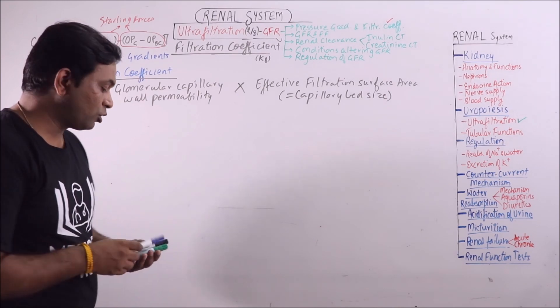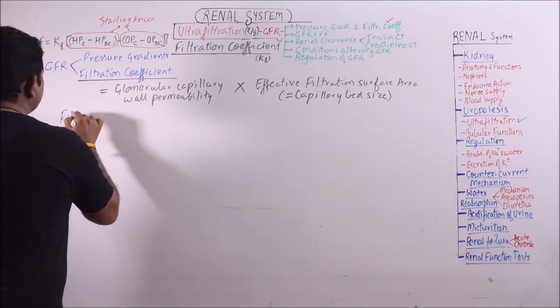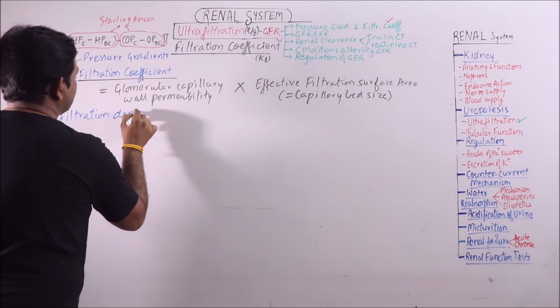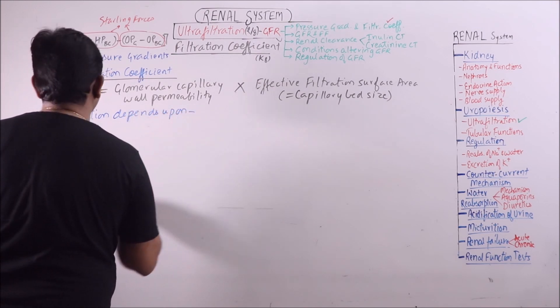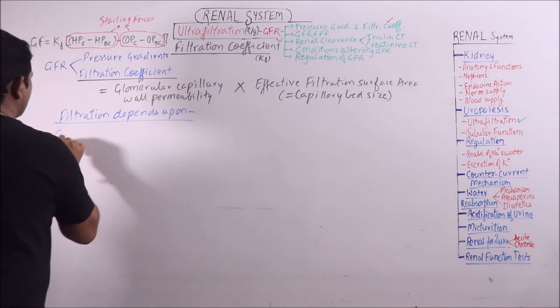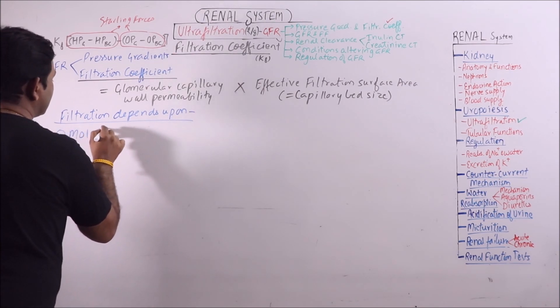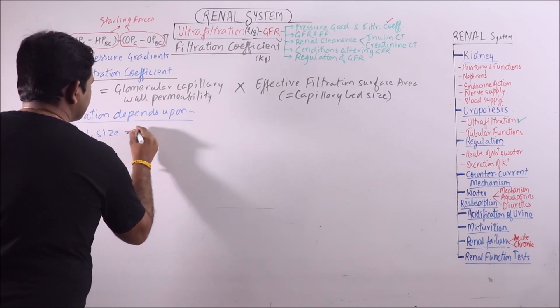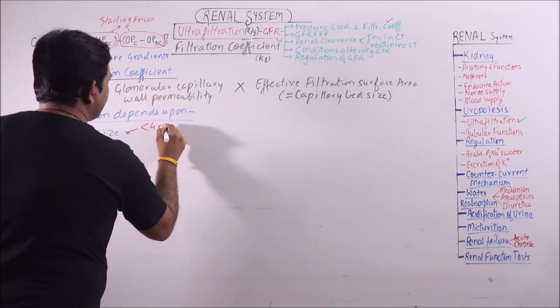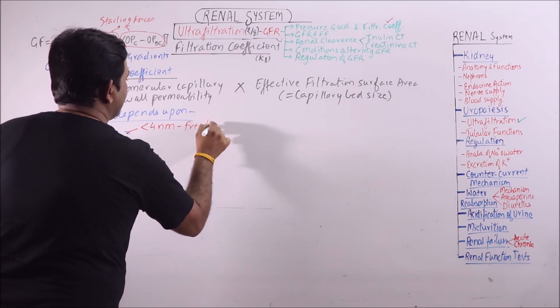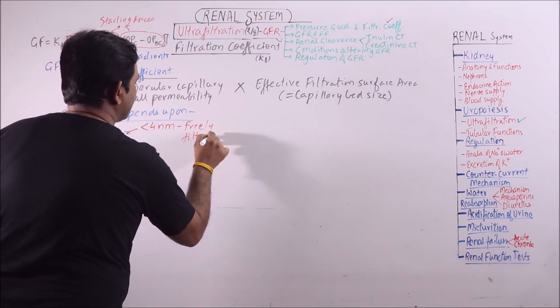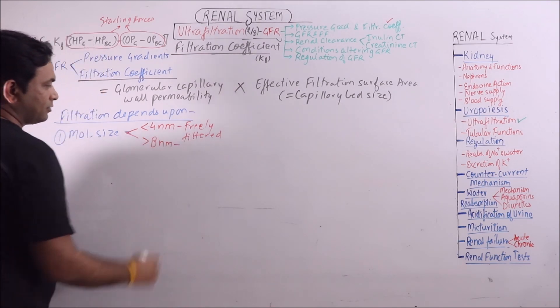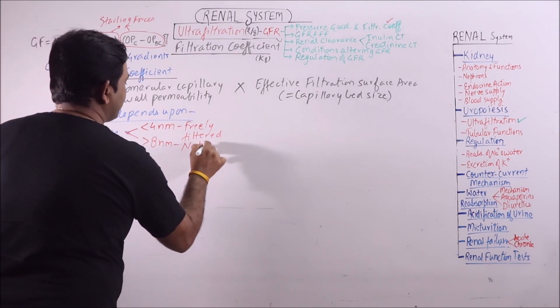The filtration or the permeability depends upon molecular size. If the molecular size is less than 4 nanometers, it is freely filtered. While if it is greater than 8 nanometers, it is not filtered.